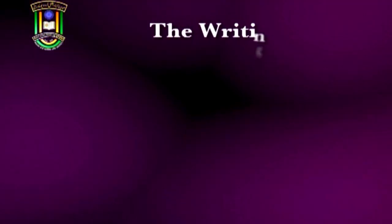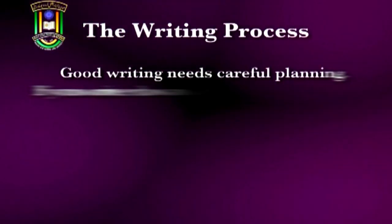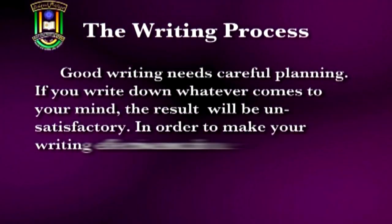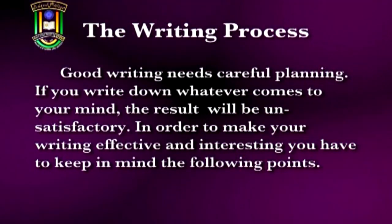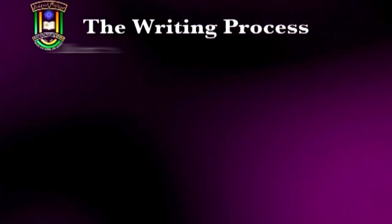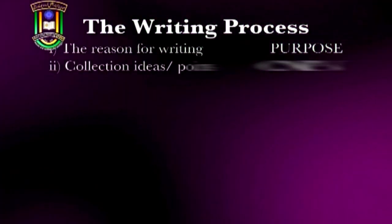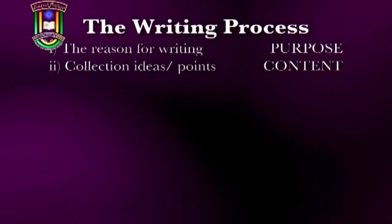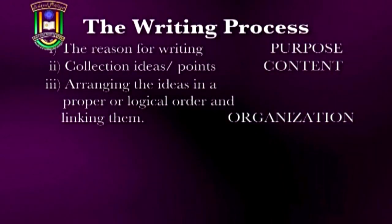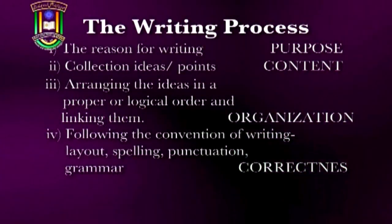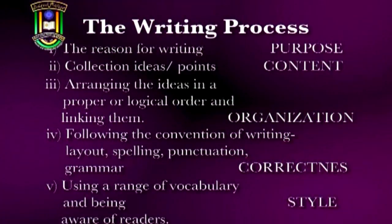Good writing needs careful planning. If you write down whatever comes to your mind, the result will be unsatisfactory. In order to make your writing effective and interesting, you have to keep in mind the following aspects: purpose — the reason for writing; contents — collection of ideas or points; organization — arranging the ideas in a proper, logical order and linking them; correctness — following conventions of writing such as layout, spelling, punctuation, and grammar; and style — using a range of vocabulary and being aware of the reader.